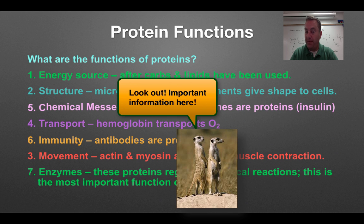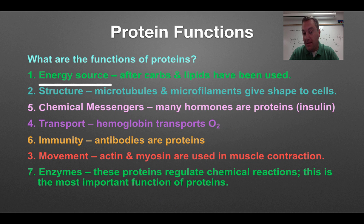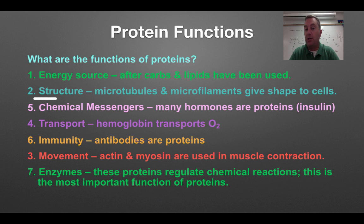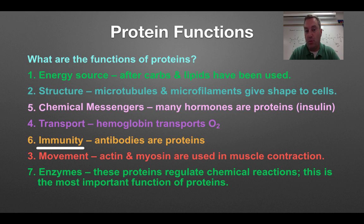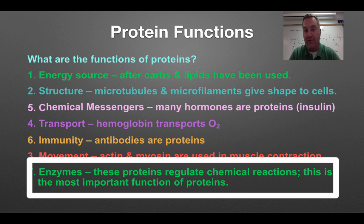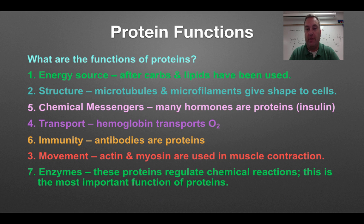Protein functions — very important, there are seven of these. Remember the mnemonic device ESCAPE TIME: E-S-C-T-I-M-E. The E is energy source — this is the third choice for living things, done only after all carbohydrates and lipids have been used up. Proteins play a key part in cellular structure — they make up the cytoskeleton, microtubules, and microfilaments. Chemical messengers — remember hormones; many hormones are going to be proteins, and insulin is an example. They're also used for transporting materials — think of hemoglobin in your blood. Immunity — antibodies are Y-shaped proteins used to defend you against pathogens. Movement — your muscle fibers are made out of protein, and actin and myosin are the two most important. And enzymes control all of the chemical reactions that occur in your body — we're going to learn about those in more detail next week.